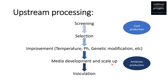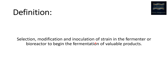Once we are done with screening, selection, and improvement, we go for media development and scale-up — determining what things are required for fermentation. Scale-up involves culturing a certain amount of bacteria before inoculating them. The addition of inoculum into the fermentation media is called inoculation. So, the upstream process can be defined as everything carried out to begin the fermentation process — selection, modification, and inoculation of the strain in the fermenter or bioreactor to begin the fermentation of valuable products.